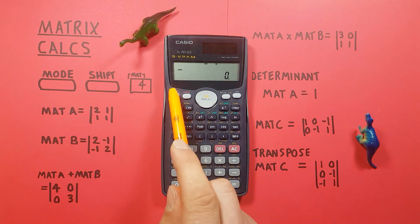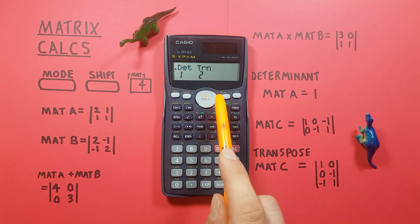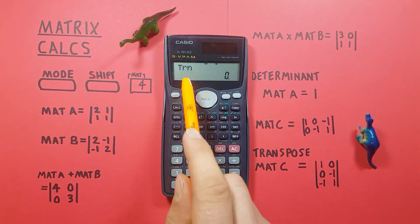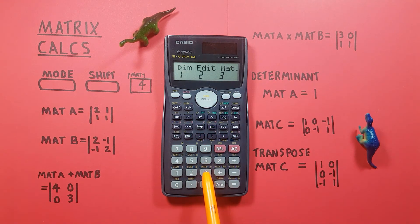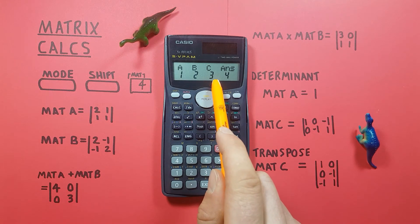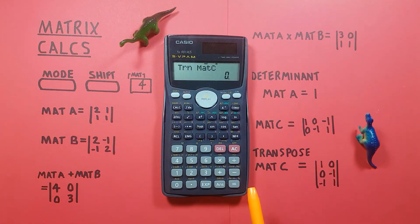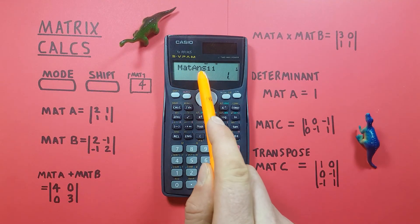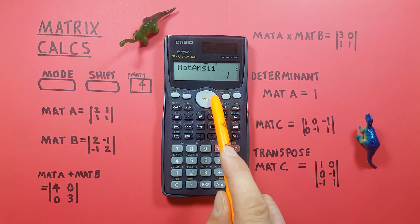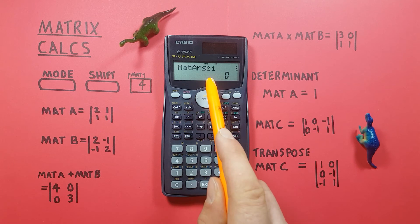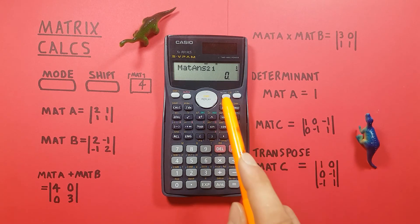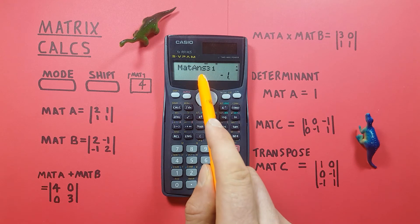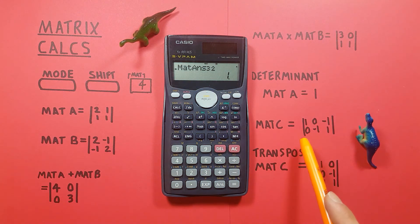Now to transpose matrix C: go back to the matrix menu, press the right arrow once, and select TRN (number 2). You'll see TRN on the screen. Then go back to the matrix menu, choose option 3, and select matrix C by pressing 3. Press equals to get the transposed matrix. The result now has three rows and two columns — row 1, row 2, and row 3 each with two column entries — confirming that matrix C has been transposed.